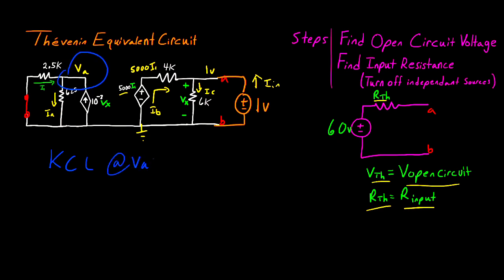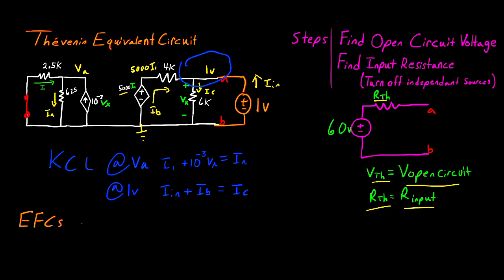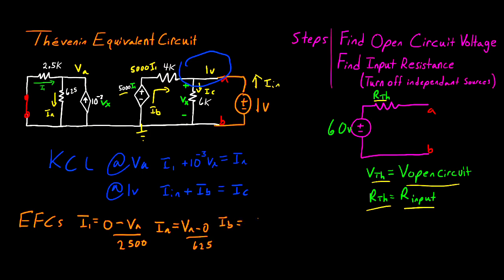Now let's write KCL. At node V_A: I1 entering plus 10⁻³·V_x entering equals I_A leaving. At the 1-volt node: I_N entering plus I_B entering equals I_C leaving. Now the component equations — for the 2.5K: I1 = (0 − V_A) / 2500, since that end is now connected to ground. For the 625Ω: I_A = (V_A − 0) / 625. For the 4K: I_B = (5000·I1 − 1) / 4000. For the 6K: I_C = (1 − 0) / 6000.